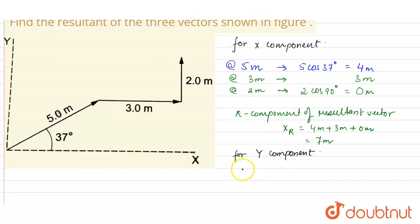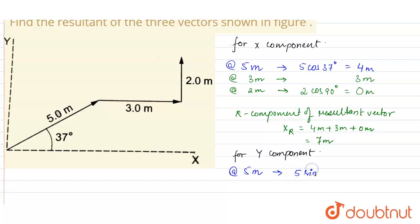Similarly, let us find the y-components. For the 5-meter vector, the y-component is 5 sin 37°, which comes out as 3 meters.